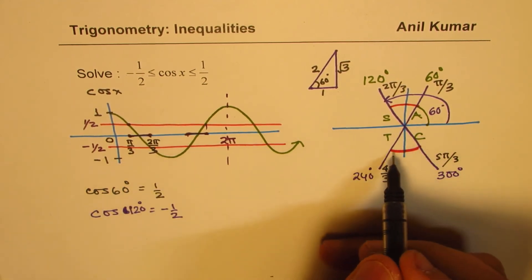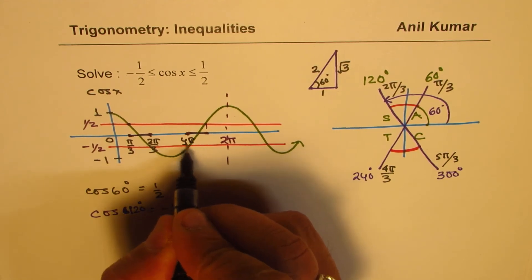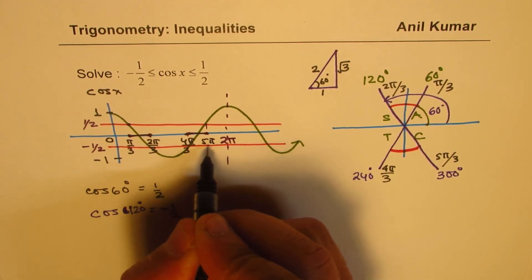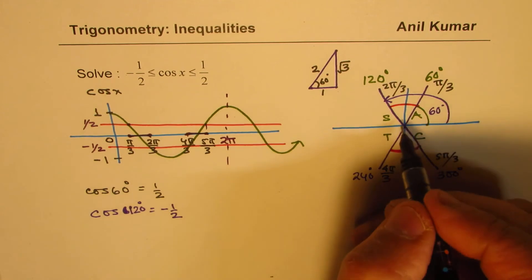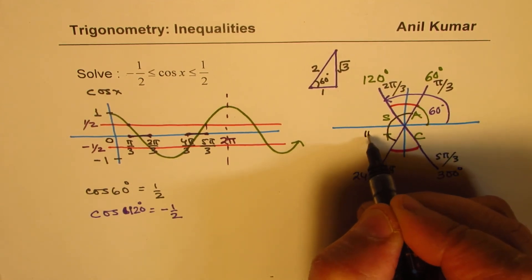So as you can see here, the starting is from 60 to 120 or π/3 to 2π/3. So this region here could be written as from π/3 to 2π/3. And then again, from 4π/3 to 5π/3.